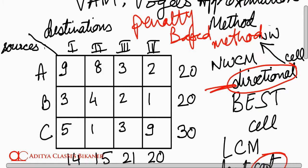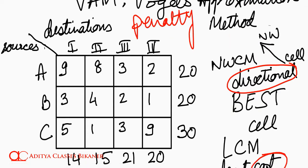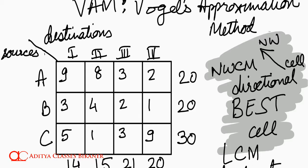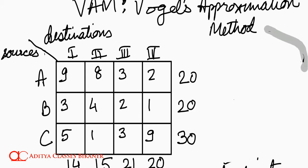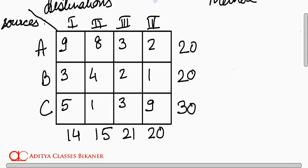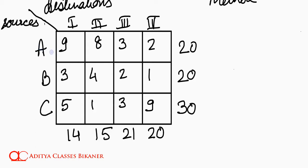A very different approach. First, we need to find out what is the best cell for the moment according to VAM. For this purpose we will be finding out penalties — penalties of each row and each column. Penalties are the costs that we pay for not making the best choice. For example, let us talk of source A. A can transport a unit to the first market in 9 rupees, to the second market in 8 rupees, to the third market in 3 rupees, and to market 4 it costs 2 rupees.